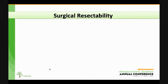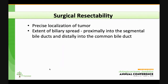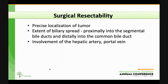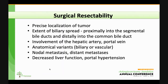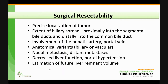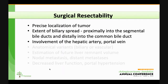Surgical resection is the best chance for cure for these patients, so determining resectability is a major goal of imaging. That entails being able to localize the tumor, determine its extension in the biliary tree, and whether it extends outside the duct to involve the hepatic artery, portal vein, or surrounding hilar structures. We also assess for anatomic variants, nodal and distant metastases, evidence of decreased liver function, and estimate the future liver remnant volume. Due to time constraints, I'll focus on the first three.